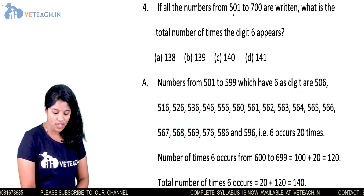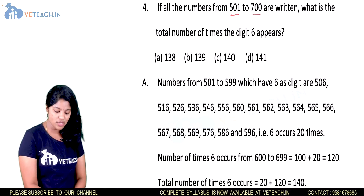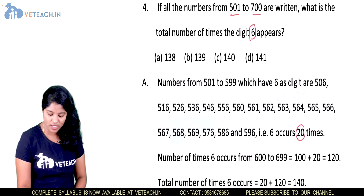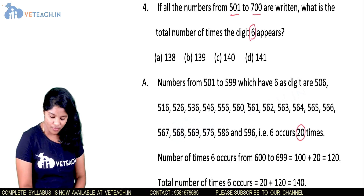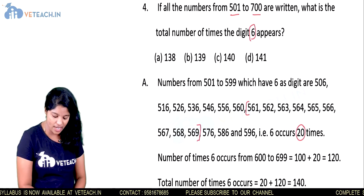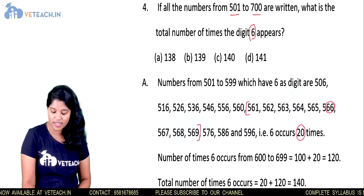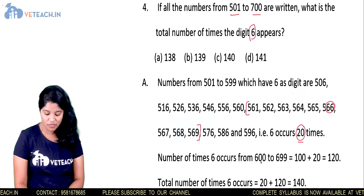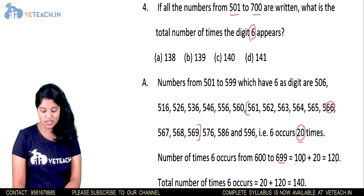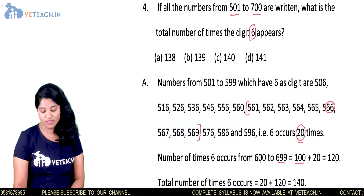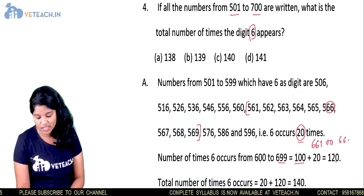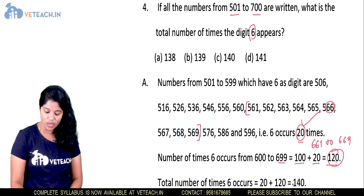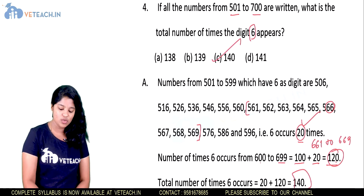Next question: from 501 to 700, what is the total number of times the digit 6 appears? From 501 to 599, the digit 6 occurs 20 times — from 561 to 569, it occurs 11 times (with 566 counted twice), plus remaining occurrences. From 600 to 699, the digit 6 appears 120 times. Total: 20 plus 120 equals 140. Option C is correct.